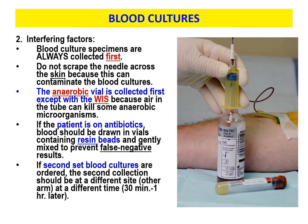The anaerobic vial is collected first — except when you're using a winged infusion set, because it's without air. We don't want to take the air in the winged infusion set tubing and push it into the anaerobic bottle, since we're trying to catch bacteria that grows in the absence of air. If the patient is on antibiotics, ask about their medications or talk to their nurse. If they are on antibiotics, draw your blood cultures in vials that contain resin beads and gently mix to prevent false and negative results.